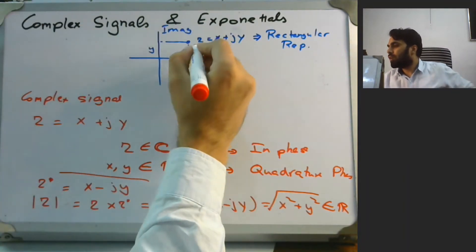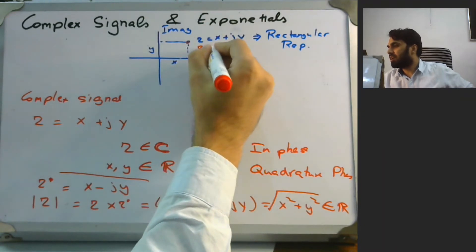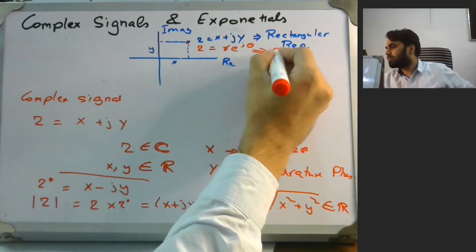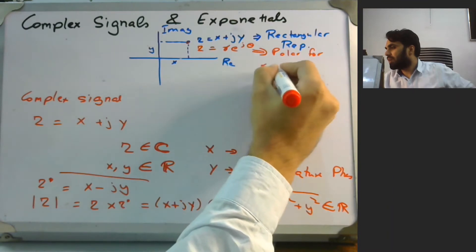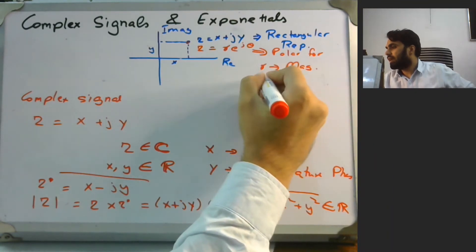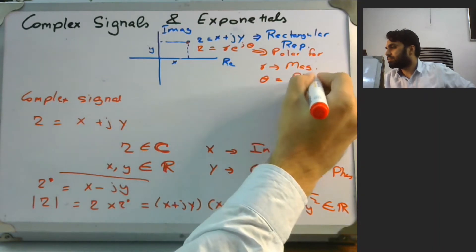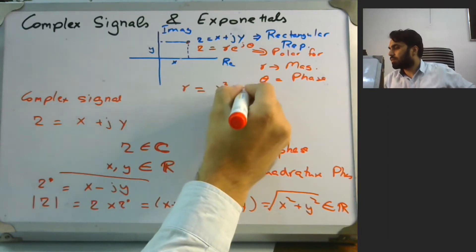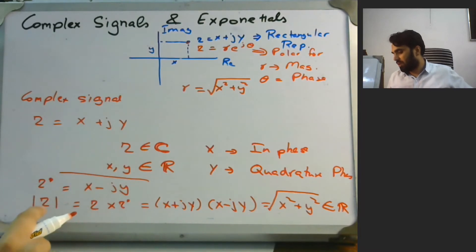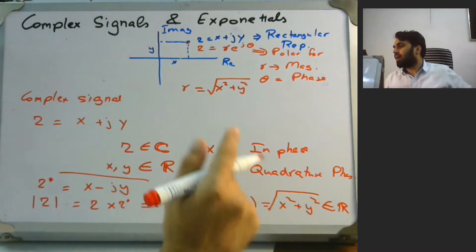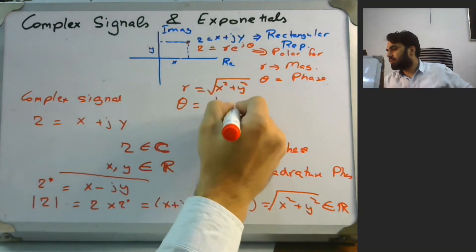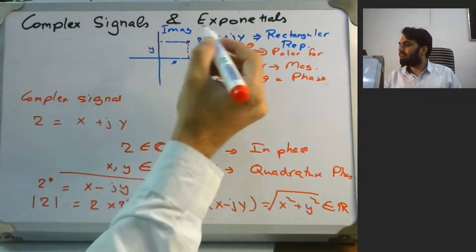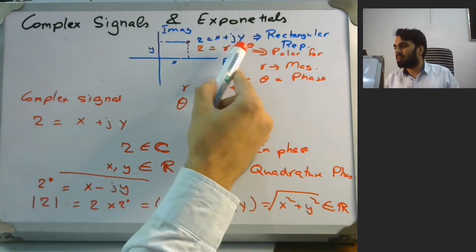However, we can also have a polar representation in which the same z can be expressed as r e to the power j theta, where r is the magnitude and theta is the phase. Specifically, r is simply the square root of x squared plus y squared, and theta is tan inverse of y over x. So a complex signal can be represented in terms of an exponential.